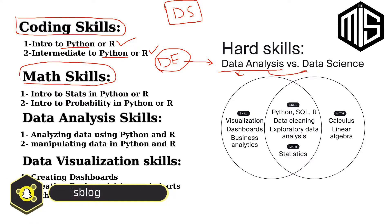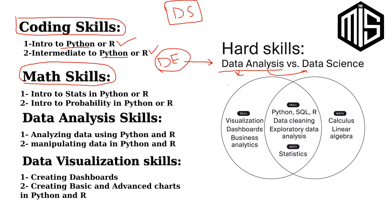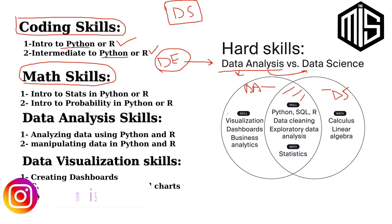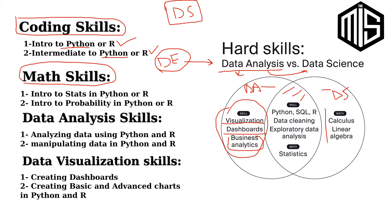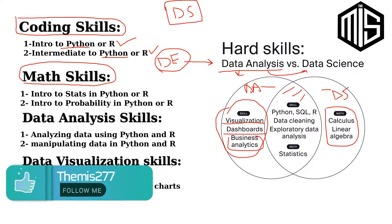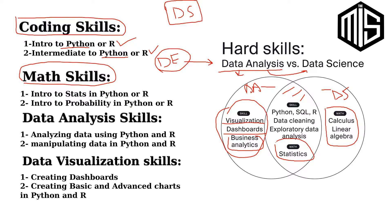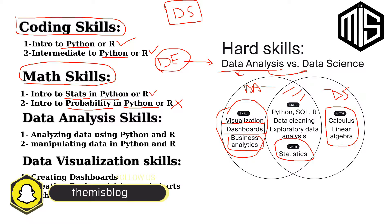Regarding math skills, looking at the data analyst Venn diagram, the intersection between data analyst and data scientist includes visualizing data, building dashboards, and doing business analytics. For math, statistics and probability are required for data analysis, so the track should give me some statistics courses and some probability courses in Python.